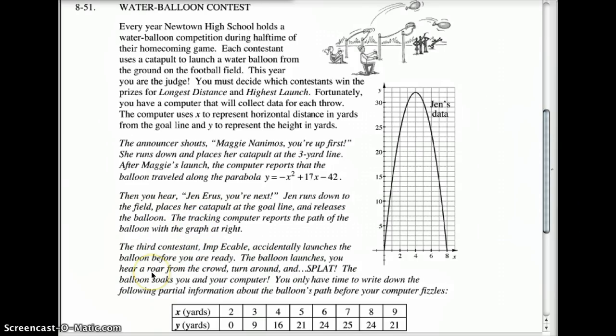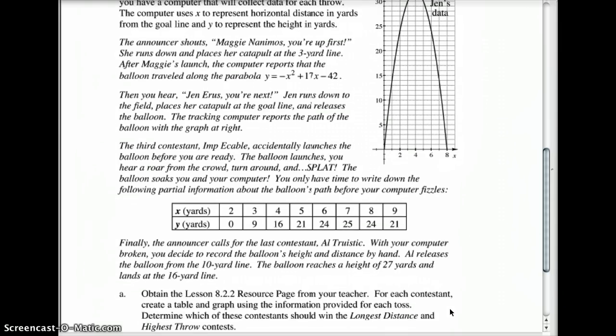Third contestant, Imp, accidentally launches the balloon before you're ready. The balloon launches. You hear the roar of the crowd turn around and splat. The balloon soaks your computer. You only have time to write down a few partial information about the balloon's path before your computer fizzles. By the way, this is what you wrote down right there.